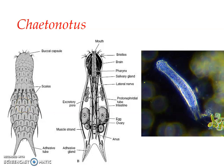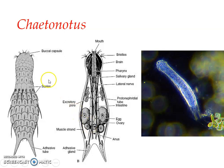The digestive tube in all gastrotricans is a very straight tube. The mouth is not terminal but sub-terminal, slightly shifted. The pharynx is long and muscular. The intestine is long and uncoiled, while the stomach is imperfectly demarcated and inconspicuous. The mouth is bordered by oral bristles and a group of sensory bristles around it.